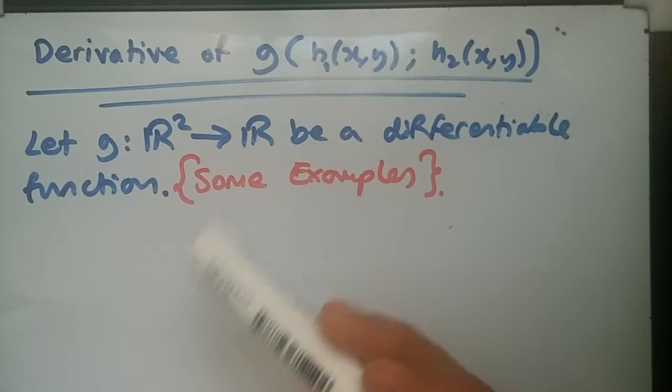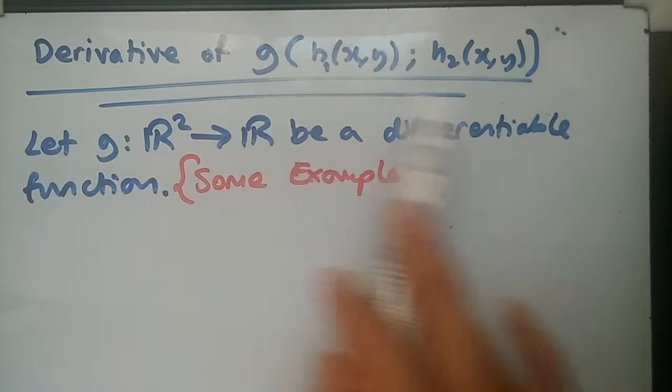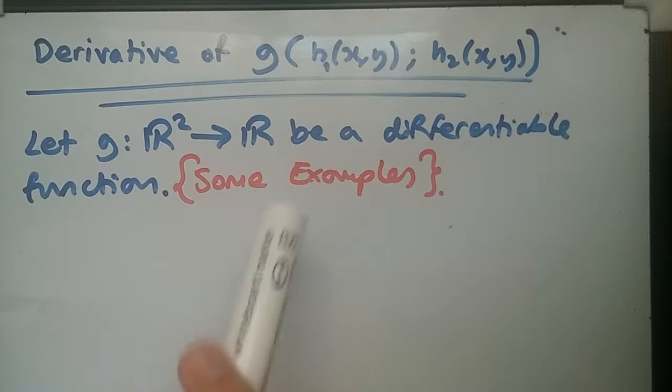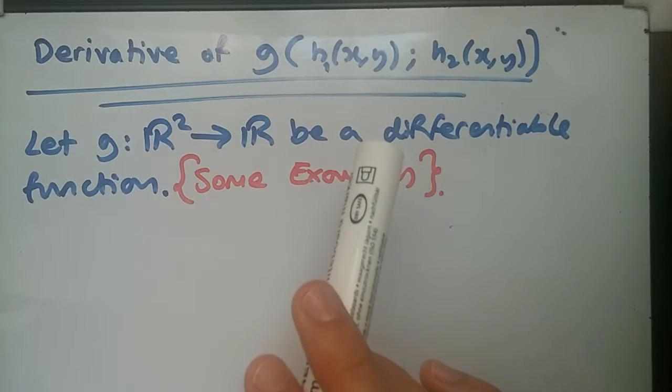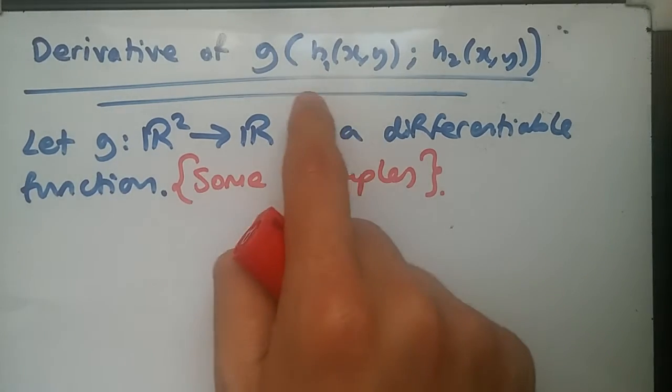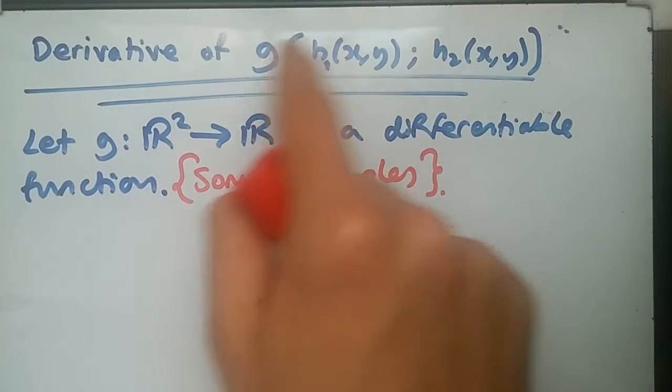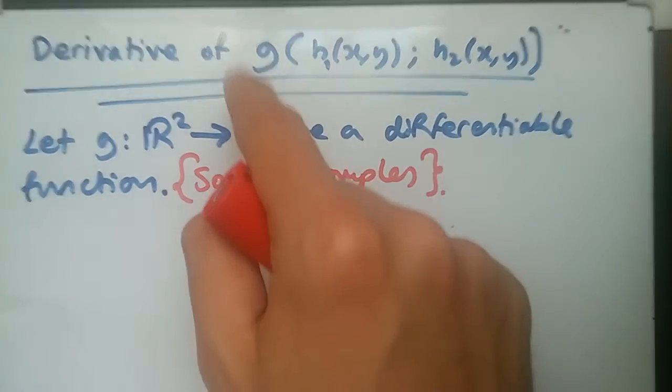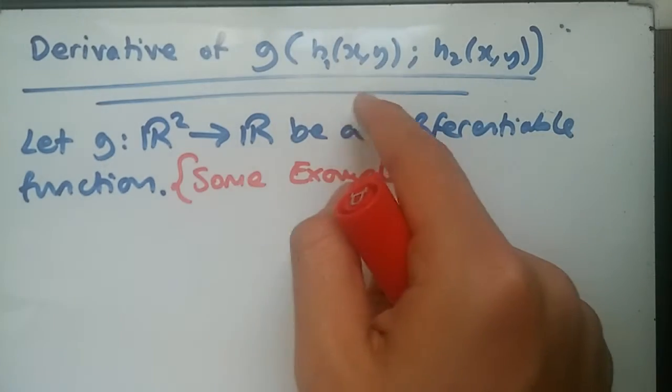When we differentiate this, we don't worry too much about the parameters calling it fx, fy in the end. Let this entire thing be a differentiable function. So let's consider some examples and how to differentiate this in particular. First we need to calculate a partial derivative with respect to x of the inside term and apply the chain rule.